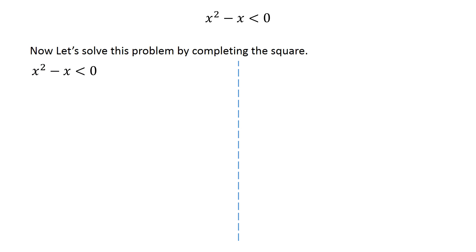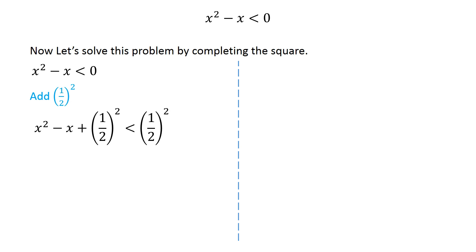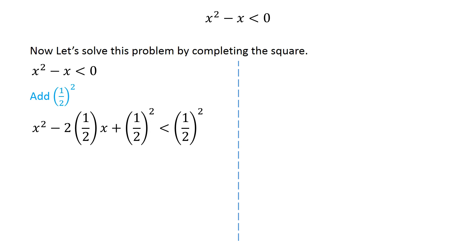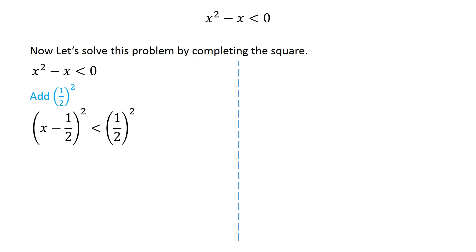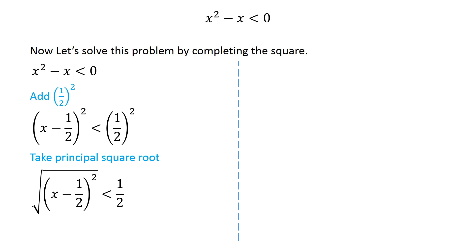Now let's solve this problem by completing the square. Add the square of 1 over 2 to both sides of this inequality. We can write x as 2 times 1 half times x. The quantity on the left side is the expanded form of x minus 1 half whole squared. Since all the values in this inequality are non-negative, we can take the principal square root.